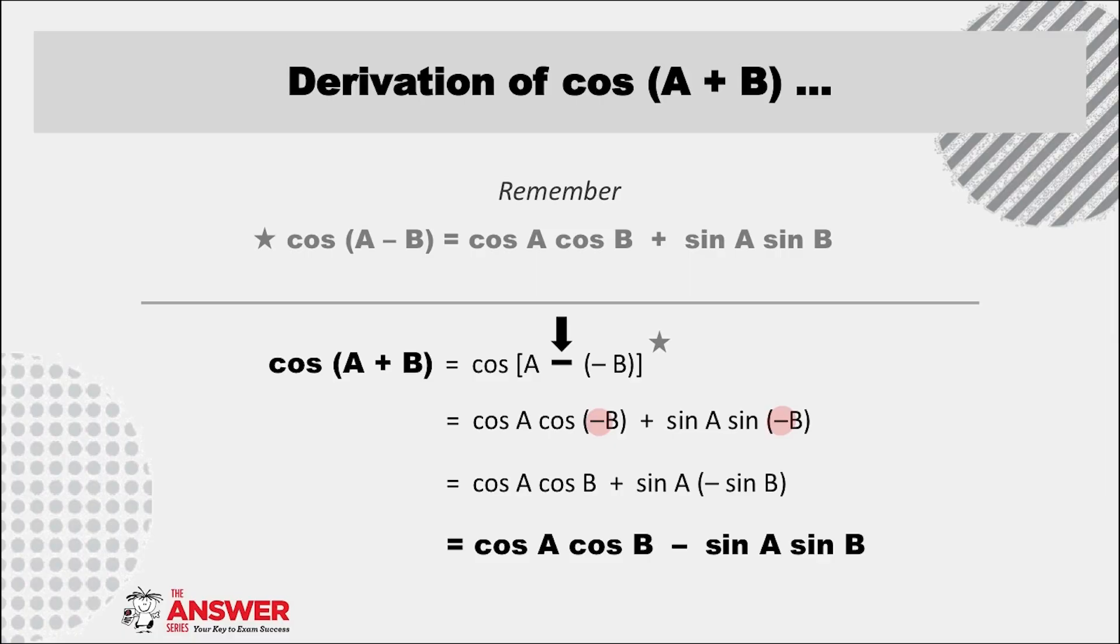So cos(-B) reduces to cos B, and sin(-B) reduces to negative sin B. This then results in the formula cos(A + B) = cos A cos B - sin A sin B. And this is the expansion of the compound angle cos(A + B).